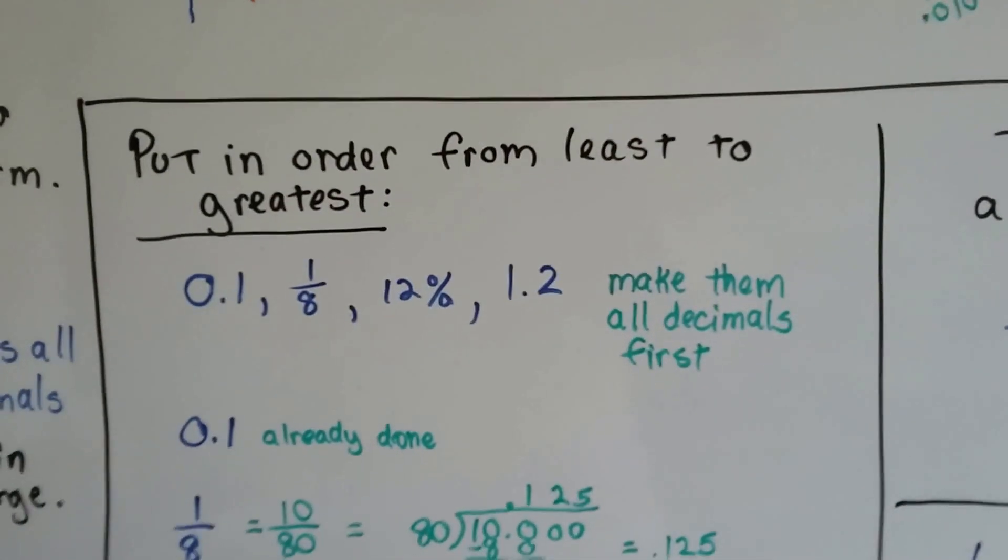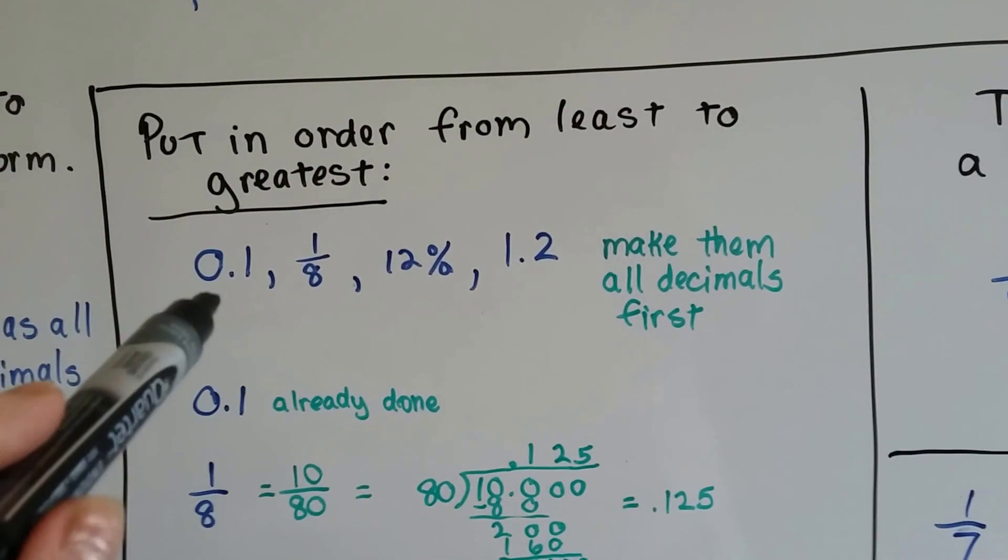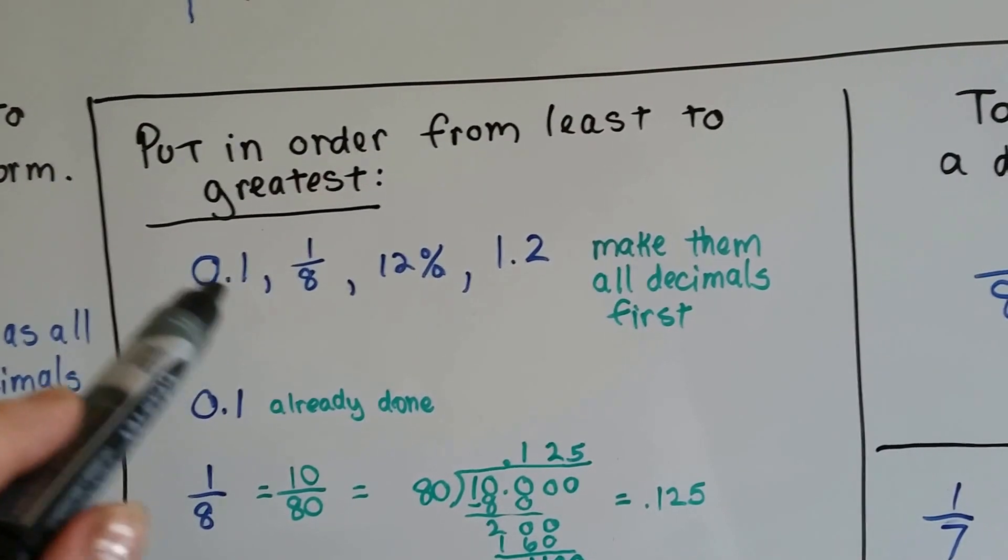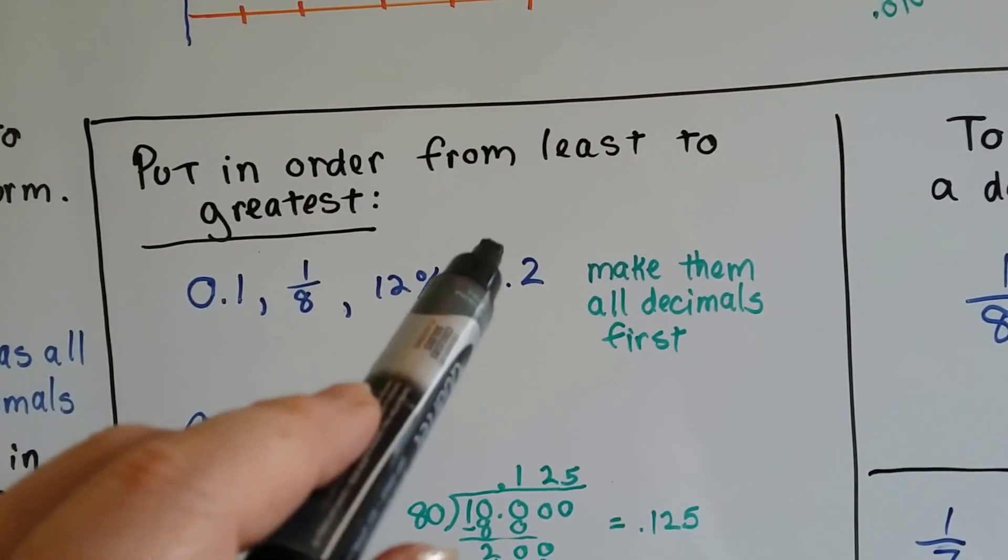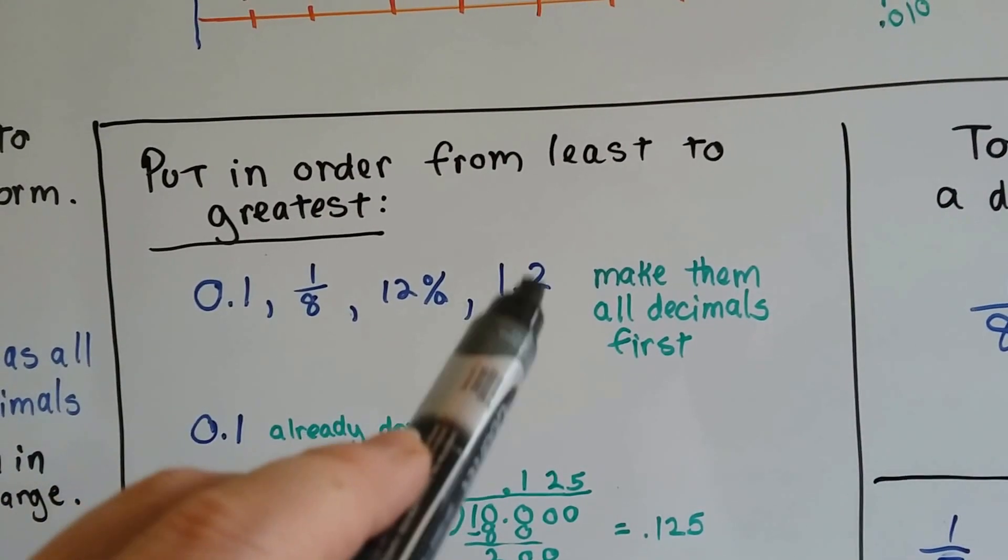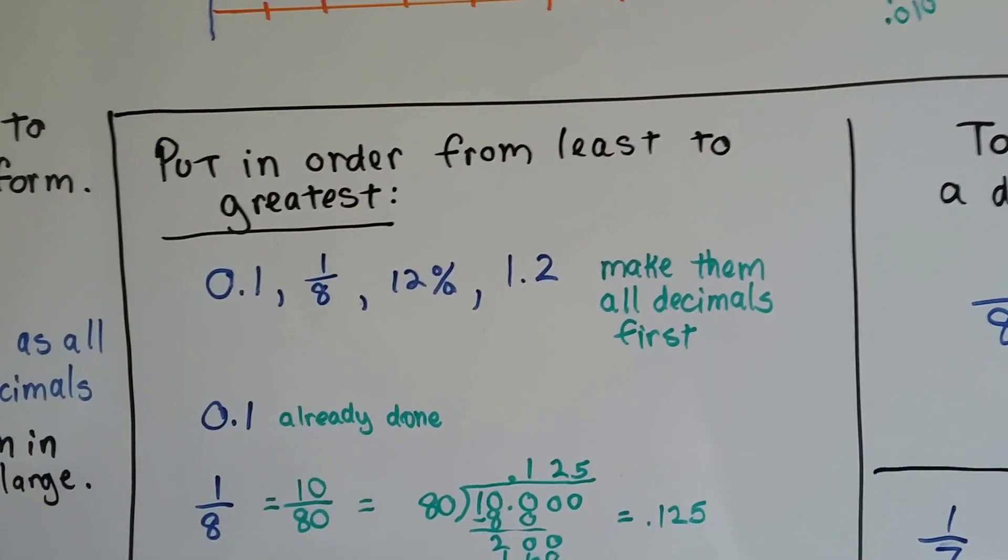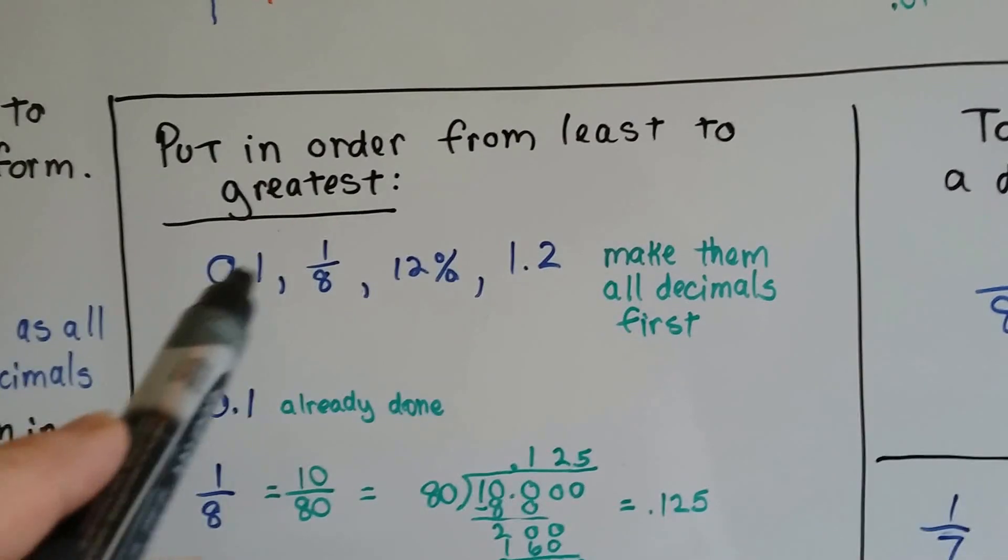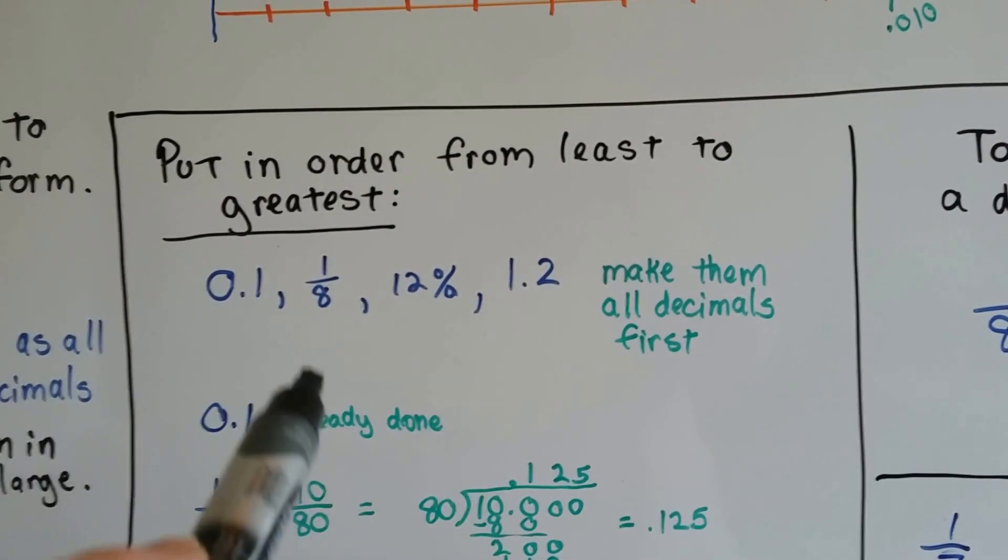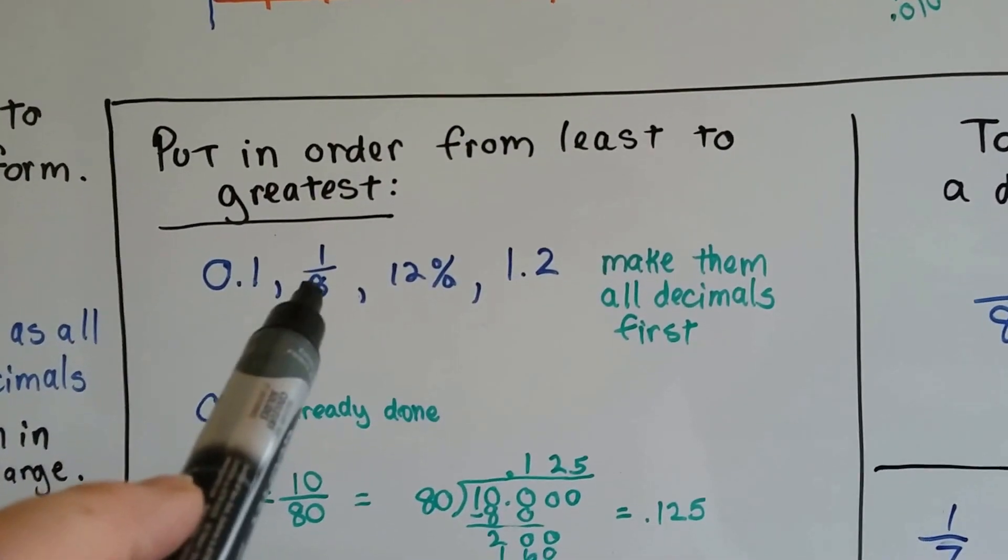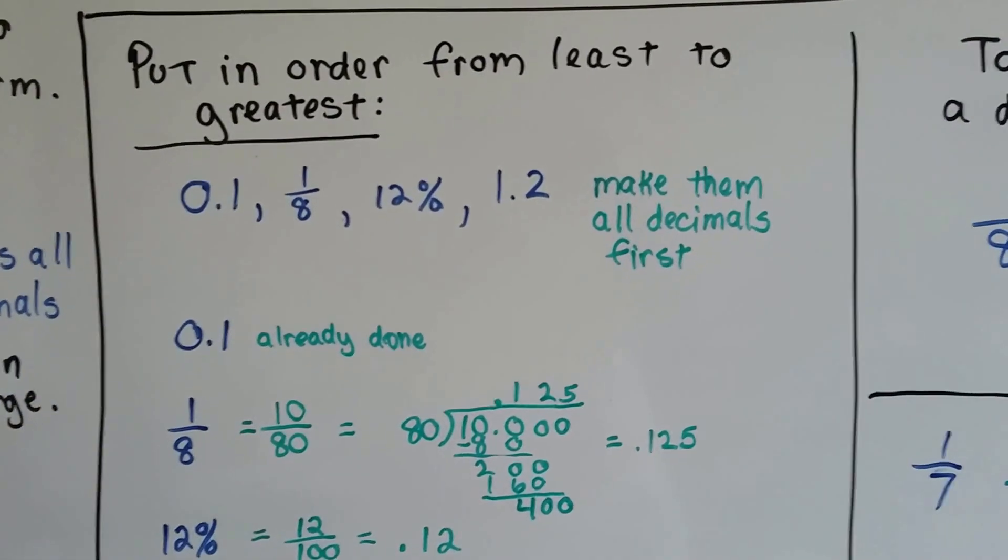Now, when we put them in order from least to greatest, and we've got 0.1 and an eighth and 12 percent, and 1.2 or 1 and 2 tenths, make them all decimals first. The 0.1 is already a decimal, and so is this one. But the 1 eighth is going to give us the most problems.